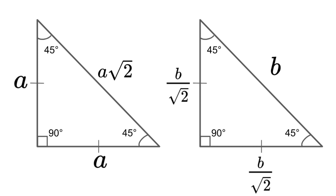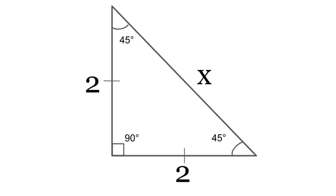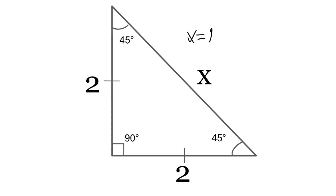Let's have some practice now. Here we have 2 and 2 as the sides of the triangle and we need to find the hypotenuse, so X will be equal to 2 multiplied by the square root of 2.